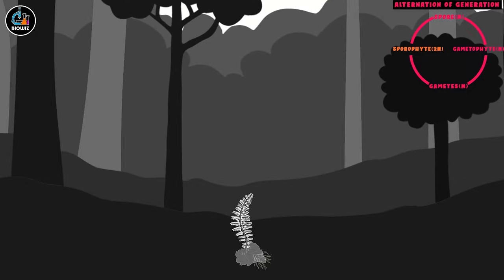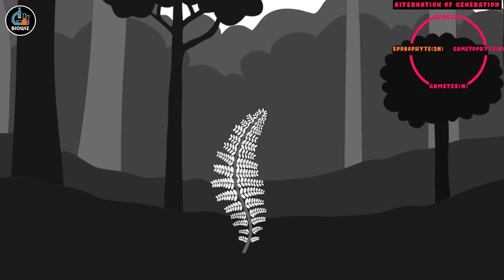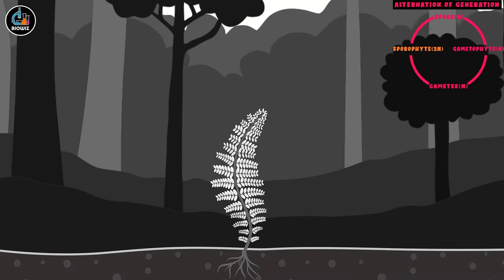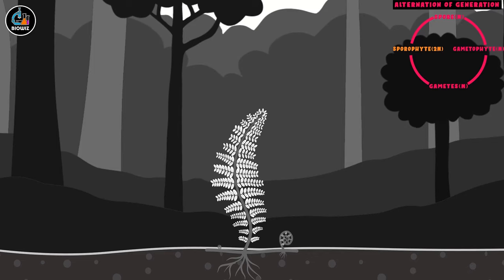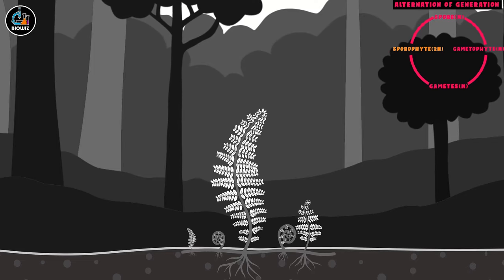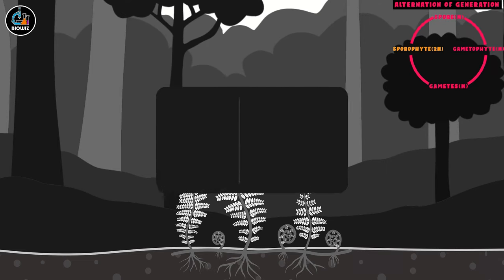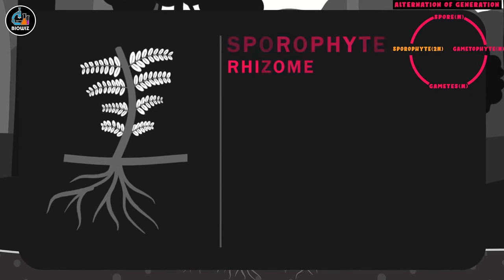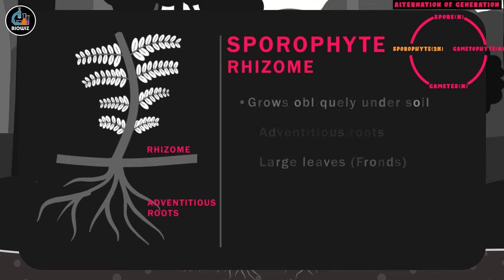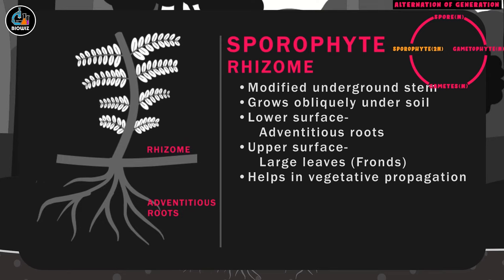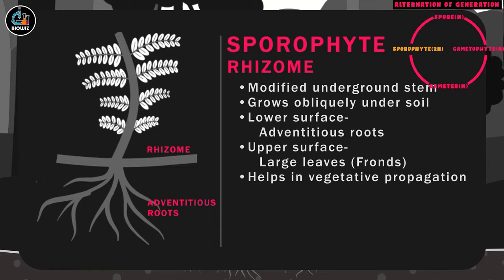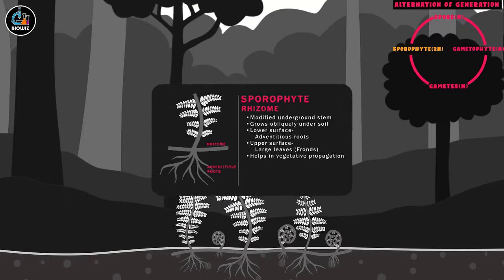Usually only a single sporophyte develops from a prothallus. The sporophyte is well developed and differentiated into true roots, stems and leaves, and has the presence of vascular tissues, xylem and phloem. The stem is usually modified into underground rhizome showing horizontal growth. The lower surface of rhizome bears numerous adventitious roots for absorption of water and minerals, while the upper surface has leaves called fronds.